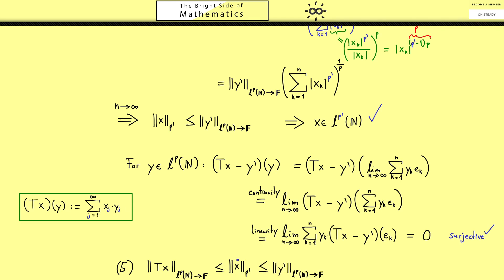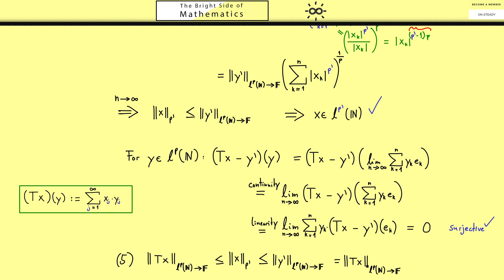However we also know from part 4 that y prime is exactly Tx. Now by comparing the left hand side and the right hand side you should see the inequalities we have here are actually equalities. Therefore we have shown the isometry property. The norm of Tx is the same as the norm of x. And with this our long proof for today is finished.